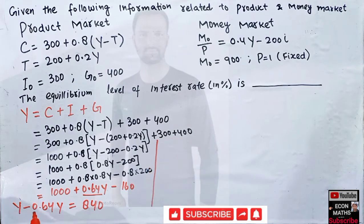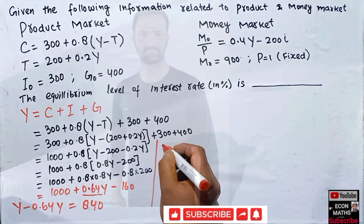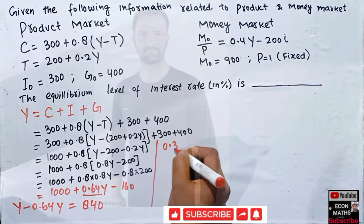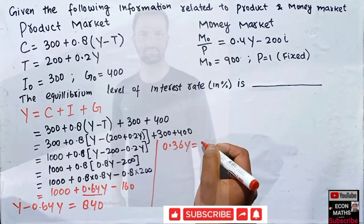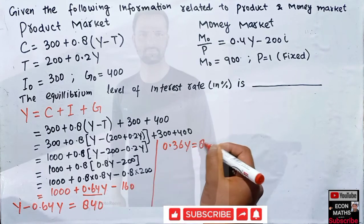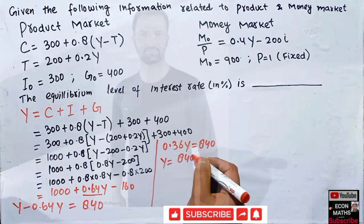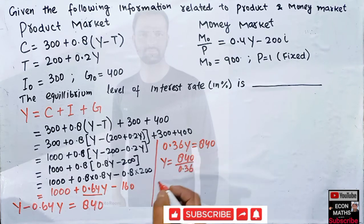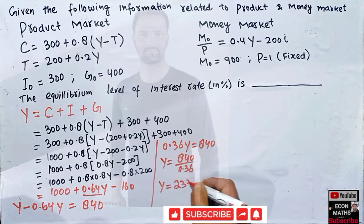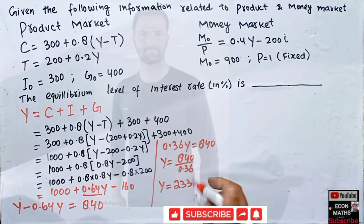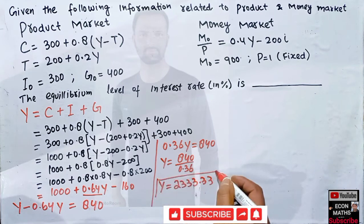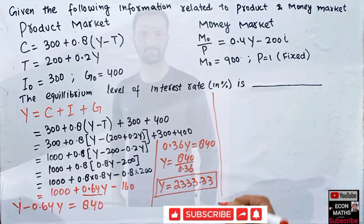Subtracting 0.64Y from Y gives 0.36Y = 840. Therefore Y = 840 ÷ 0.36, which gives the equilibrium level of income as 2333.33. This is our equilibrium income, but we still need to find the equilibrium interest rate.